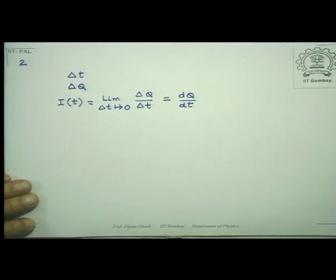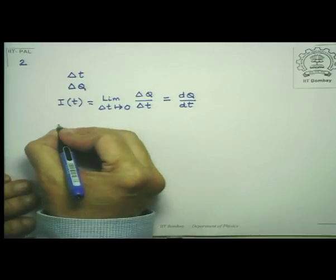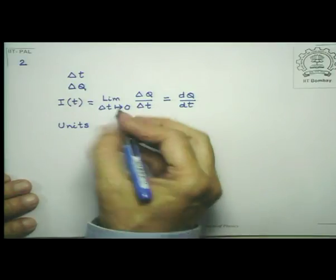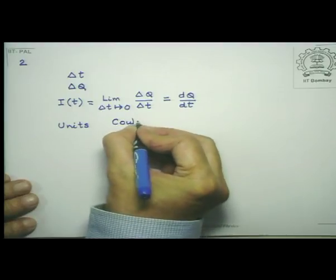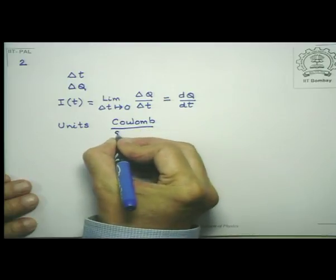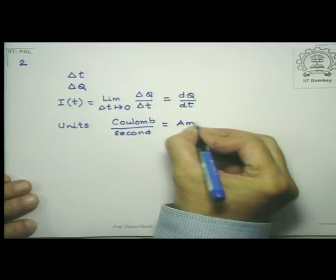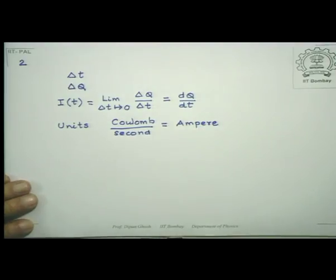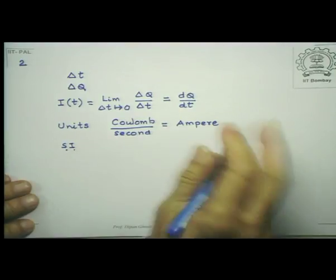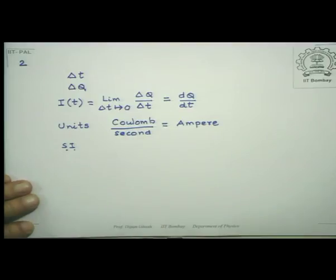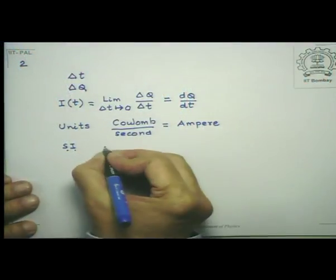The unit of current is charge divided by time, which is coulombs per second — and this is given the name ampere. In SI units, the ampere is actually defined not as coulombs per second, because coulomb is not a fundamental unit — the ampere is. It is defined in terms of its magnetic effects, which we will discuss in later parts. Ampere is a fundamental unit in SI.